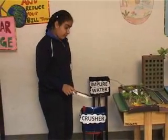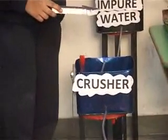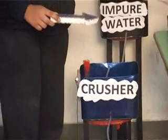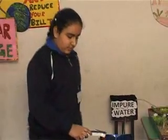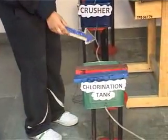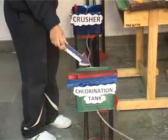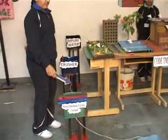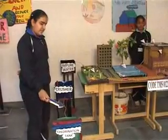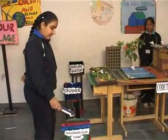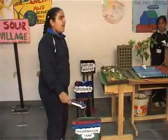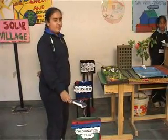The crusher will crush all the stones in the water. It is important for the crusher to crush the stones because the stones can block the pipe. Then through a pipe, it will go to the chlorination tank. As you can see, there are two netbed-based structures. The first netbed-based structure allows the clean water to enter the purification tank, and the second netbed structure does not allow the crushed stones to enter. The water is purified here.